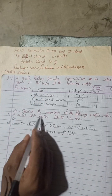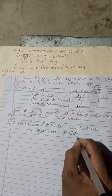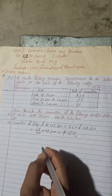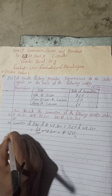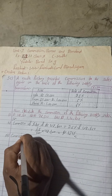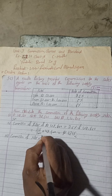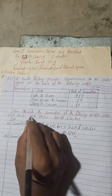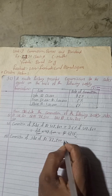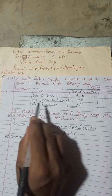Therefore, the commission for sale number one is Rs 1,215. Now for number two: commission of sales of Rs 72,500.